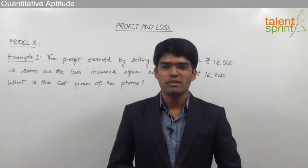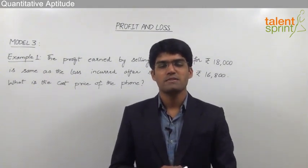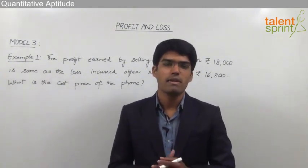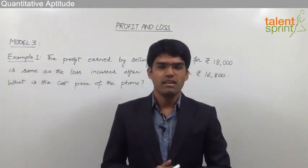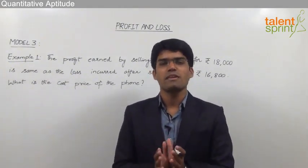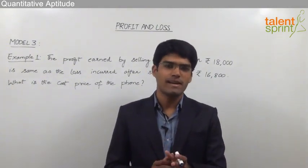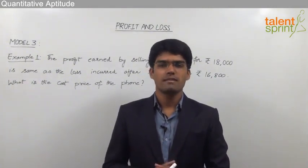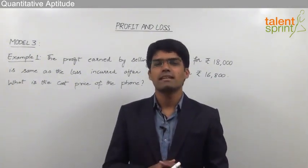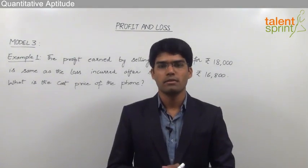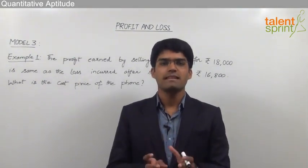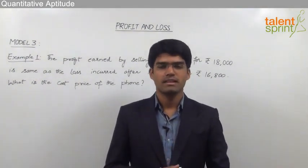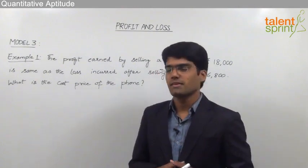Let us now take the third model from profit and loss, which is a very popular question in bank exams. Here, the profit made by selling an article at some value is equal to the loss made by selling the article at some other value. From this data, we are supposed to find out what is the cost price. Let us look at the question.